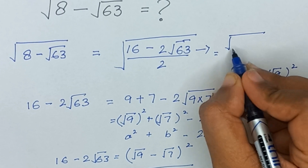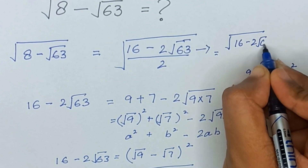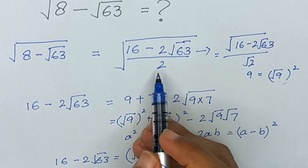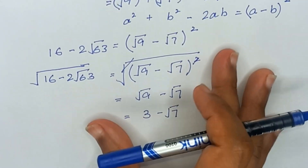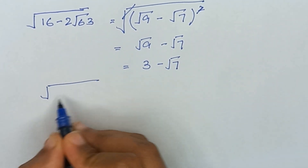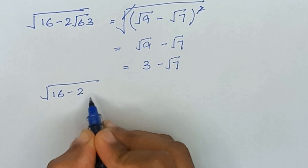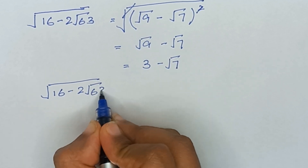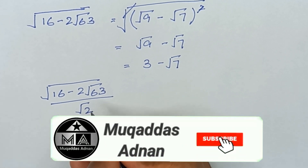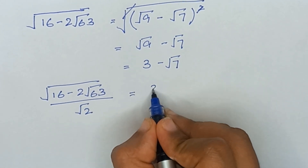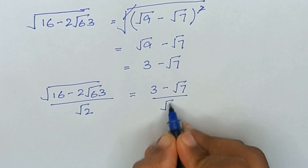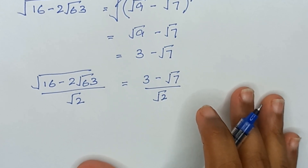Now this is the same as square root of (16 minus 2 times square root of 63) divided by square root of 2. So now we will divide this term by square root of 2, and it becomes (3 minus √7) divided by √2. Now we will rationalize this expression.